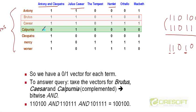To answer the overall query Brutus and Caesar and NOT Calpurnia, we can take the complement of the Calpurnia vector and AND it to the result of ANDing Brutus with Caesar. Or you can think of taking a bitwise AND of these three vectors, Brutus, Caesar and NOT Calpurnia.